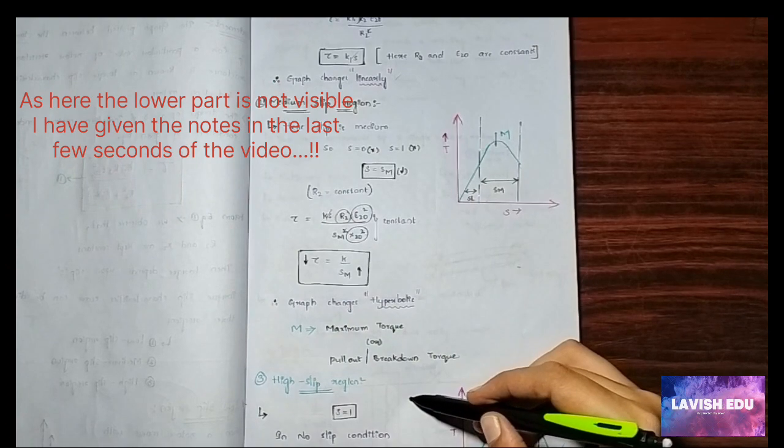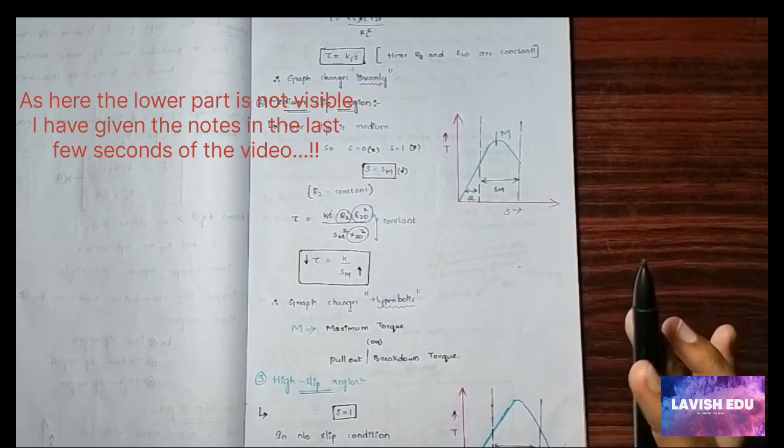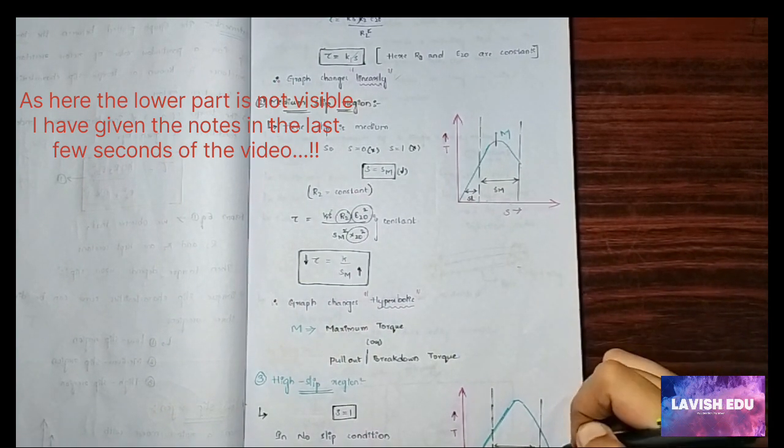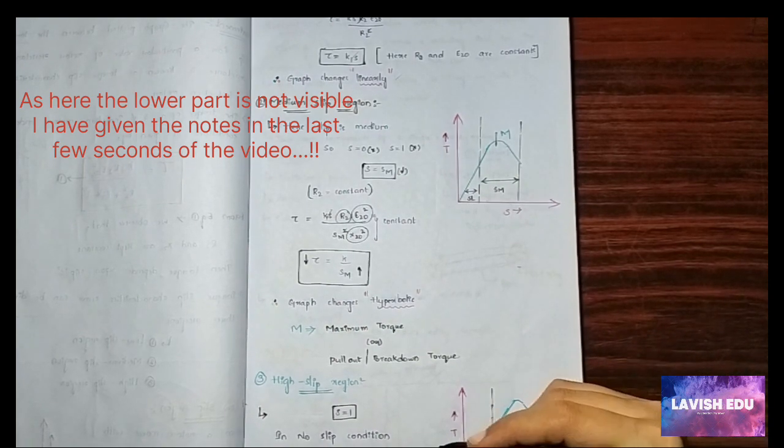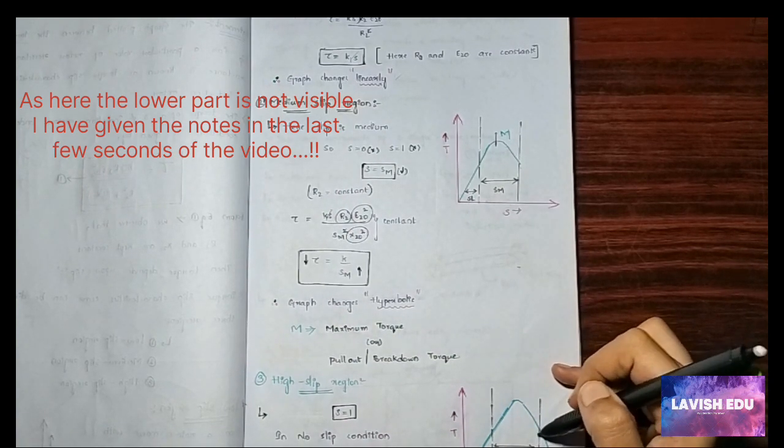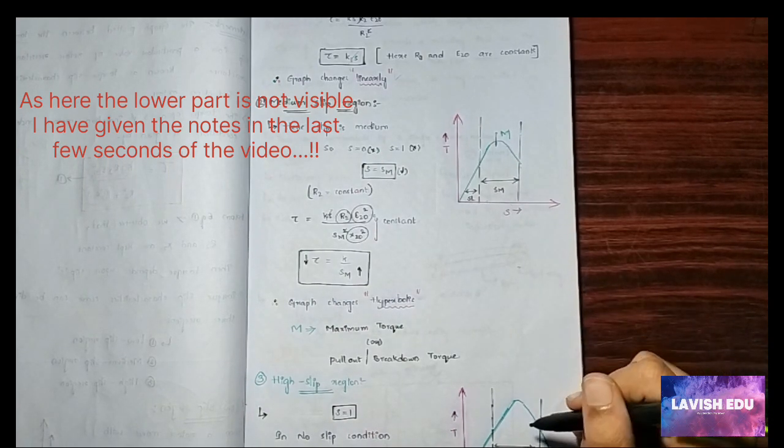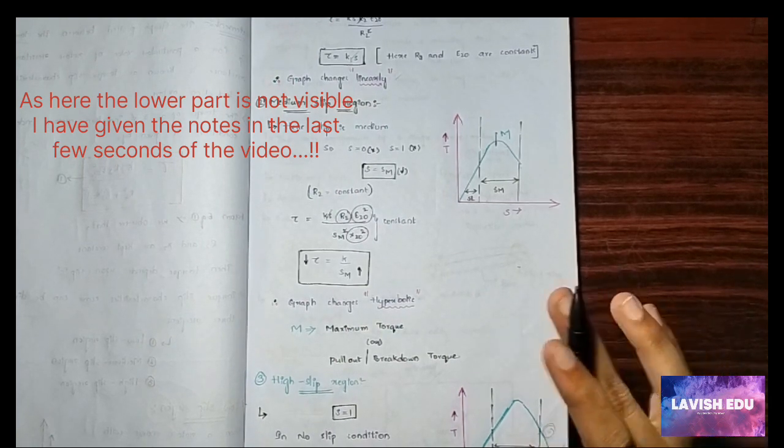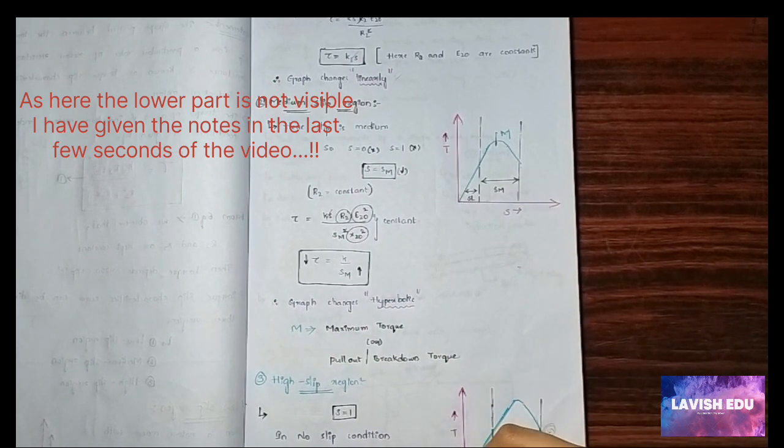Now the third region is the high slip region. For high slip region, s equals to one. Here there is no slip condition, it can move in any direction, so there is no guarantee of giving a curve in this form. You can give here any form of the curve. Here the slip is cut at one point because it interchanges in any direction. In this phase, the machine stops to work. In high slip region, the machine stops to work.